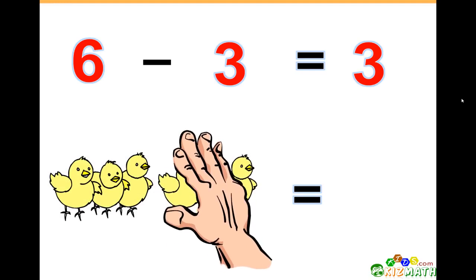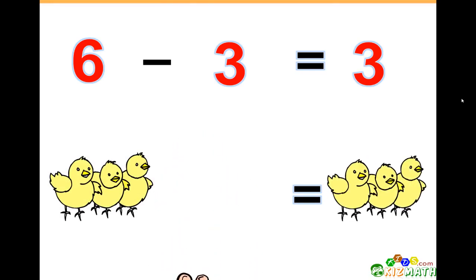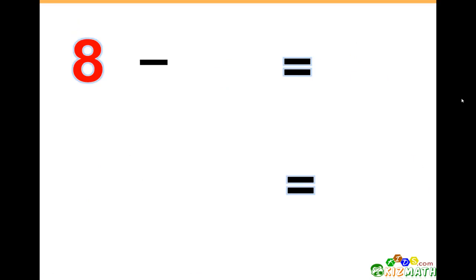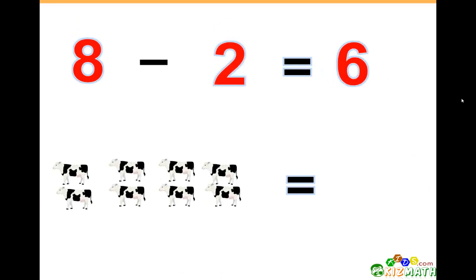8 minus 2 equals 6. If we have eight cows and we take away two cows, there are only six cows left.